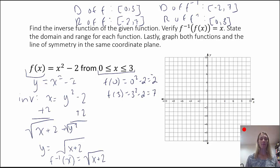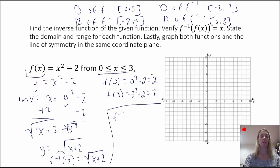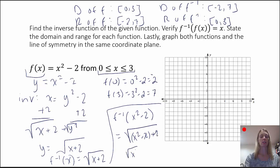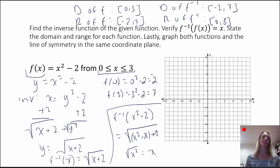Let's verify. This is going to be f-inverse of f of x, which is x squared minus 2. Plugging x squared minus 2 into the inverse function anywhere I see x gives me the square root of x squared minus 2 plus 2. The minus 2 and plus 2 cancel, leaving the square root of x squared. Technically this should be the absolute value of x, but because we have those domain restrictions, we can treat it as x.